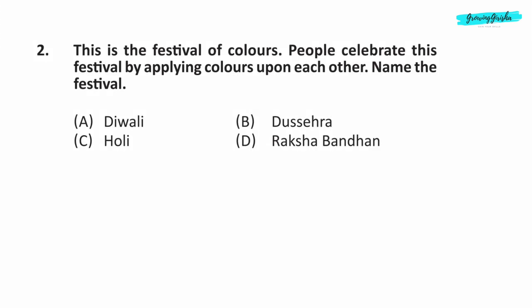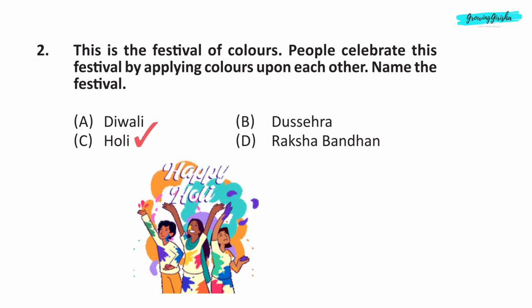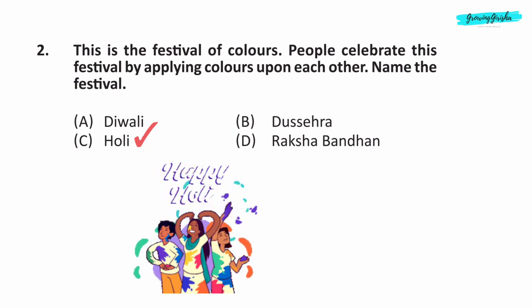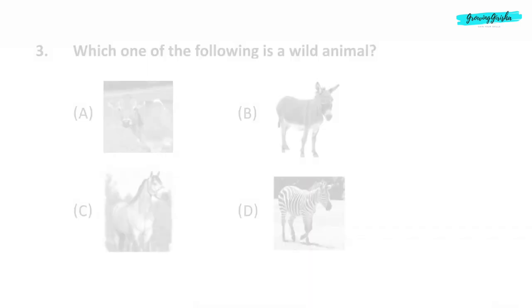Question 2. This is the festival of colors. People celebrate this festival by applying colors upon each other. Name this festival. Option C — Holi. Diwali is the festival of lights. Dashera is celebrated to mark good over evil. And Raksha Bandhan is the day of brother and sister when the sister ties Rakhi on the brother's hand.